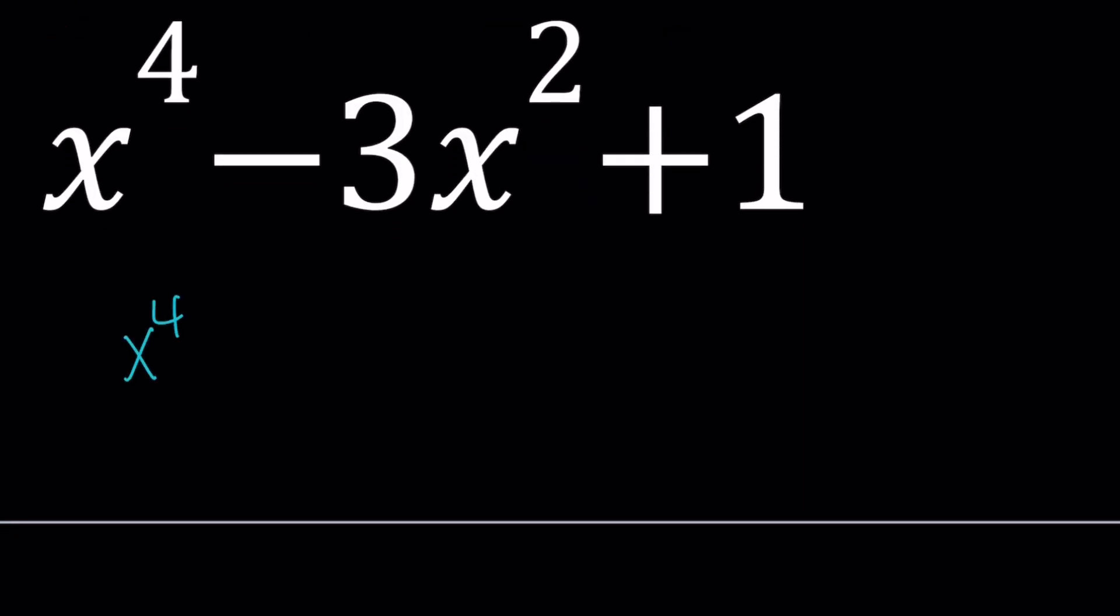What if we had something like x to the fourth minus 5x squared plus 4? Now, one of the things you can do is you can replace x squared with something like y, and then this will turn into y squared minus 5y plus 4, which is a factorable quadratic. And then you could factor this into y minus 1 and y minus 4.